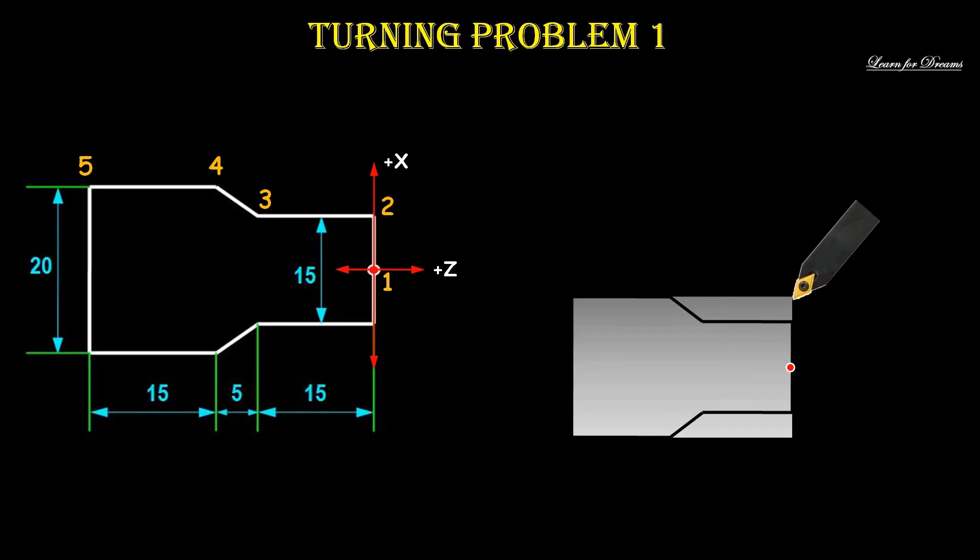Then I will start the actual turning operation. Ab mainne tool ko second point pa rakha hai kyunki waha se material remove karna hai. The tool will travel in a straight line like this, then there is some inclination but that doesn't matter. Aapko sirf next point ka coordinates dena hai. Again tool will remove material from this part and here we go, hume humara required design mil gaya.